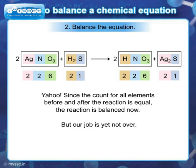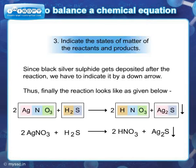But our job is not yet over. Step 3: Indicate the states of matter of the reactants and products. Since black silver sulfide gets deposited after the reaction, we have to indicate it by a down arrow. Thus, the final balanced reaction is: 2AgNO3 + H2S → 2HNO3 + Ag2S (precipitate).